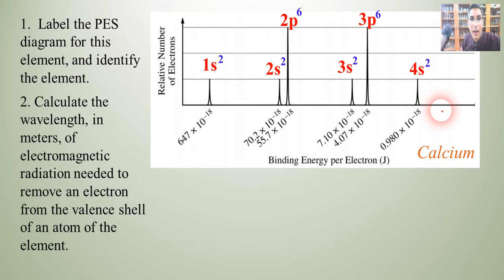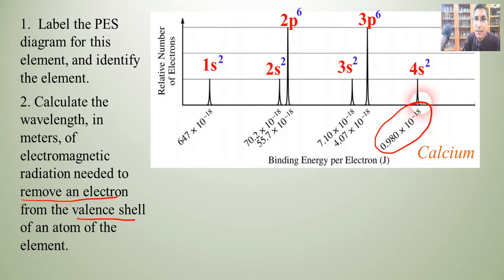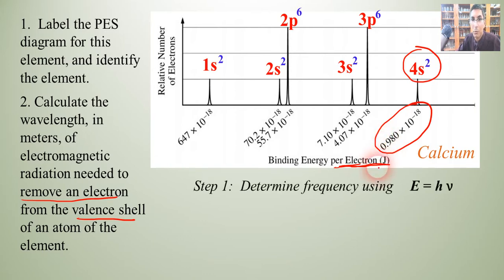Now let's calculate the wavelength in meters of electromagnetic radiation needed to remove an electron from the valence shell of calcium. We're removing an electron from the valence shell, so we use the 4s value: 0.980 × 10⁻¹⁸ joules per electron. First we find the frequency using E = hν, where h is Planck's constant, 6.63 × 10⁻³⁴ joule·seconds. Dividing 0.98 × 10⁻¹⁸ by 6.63 × 10⁻³⁴, the frequency is 1.48 × 10¹⁵ Hz.